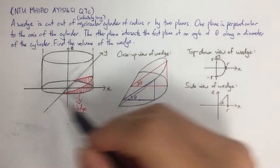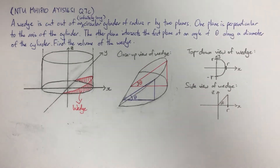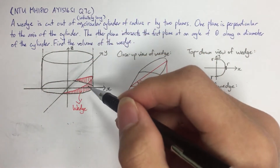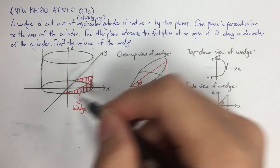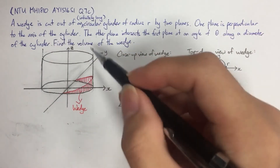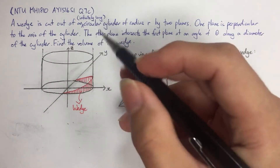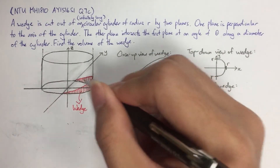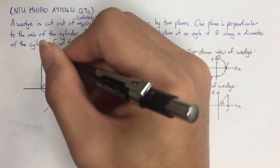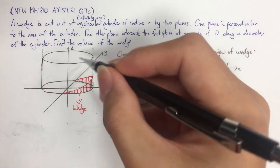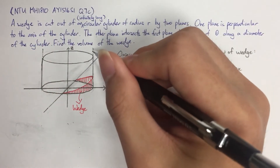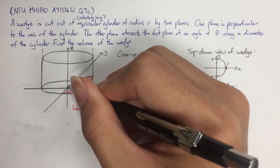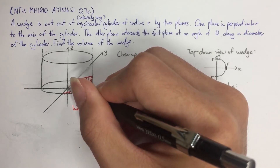Let's begin with diagrams. The first diagram is the cylinder — an infinitely long circular cylinder of radius r. I've drawn the cylinder with the base at the xy-plane, and it goes up infinitely along the z-axis. The center of the cylinder is going to be the origin.